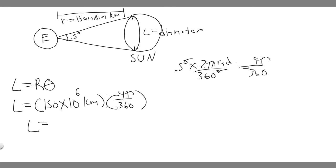So if you go ahead and do this, 150 times 10 to the sixth multiplied by π over 360, you're going to get 1,308,996.939, which is essentially 1.309 times 10 to the sixth kilometers. But keep in mind what this is. This is essentially just the length or the diameter. So we need to find the radius and we can divide it by two to do that.